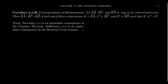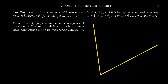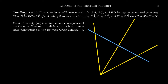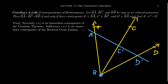We can also go the other way around. Suppose we have our rays again, and we have some point B. There's some point A', there's some point C', and some point D'. These are points on the rays BA, BC, and BD. We're assuming that C' is between A' and D'. This follows by the between-cross lemma.